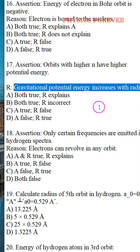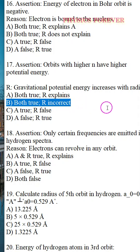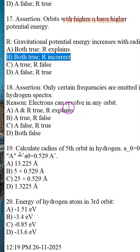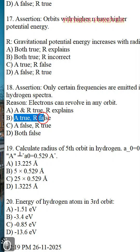Question number 17 and question number 19: Calculate the radius. The correct option is B. Both assertion and reason are true, but the reason is incorrect as an explanation. Question number 18 is also an assertion and reason type. The correct option is B: A is true and R is false.